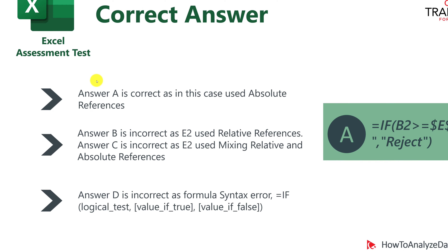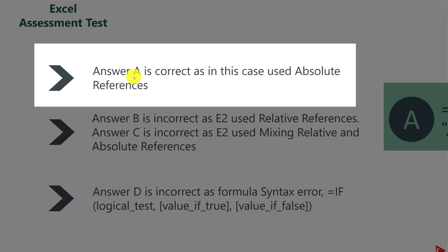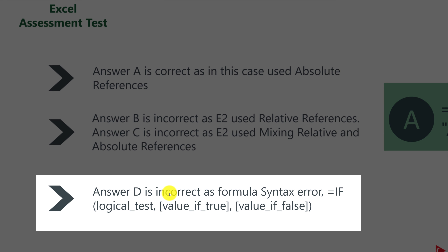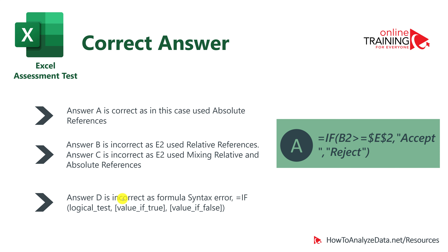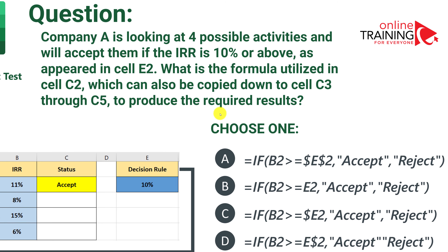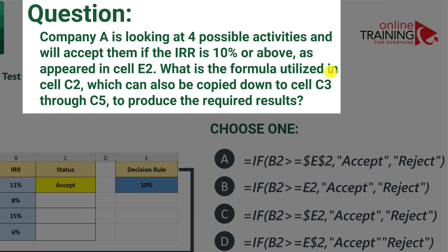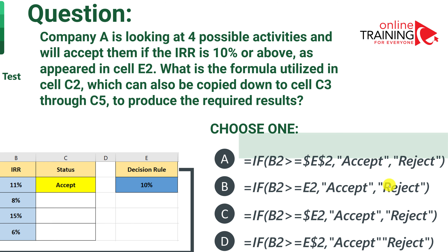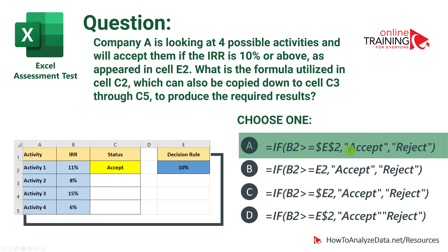The correct answer here is A, because it uses absolute references. Choice B is incorrect because it uses relative references. Answer D is incorrect because there is a syntax error in the formula. Some answers do lead to correct results for one cell, but because the question asks for a formula that can be copied down to C3 through C5, that requirement leads to only one correct answer. Hopefully you got this one right — it's a tricky question.